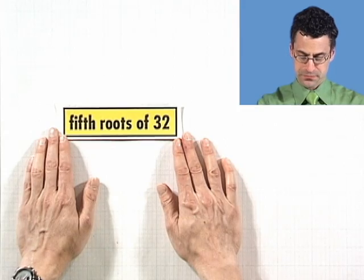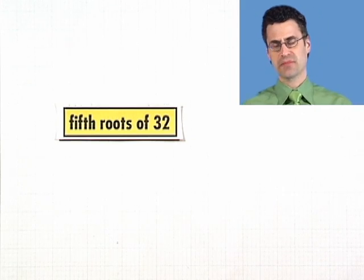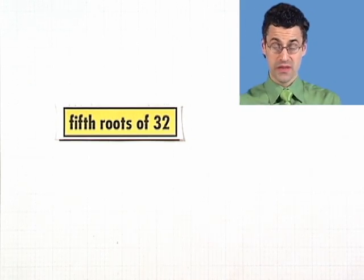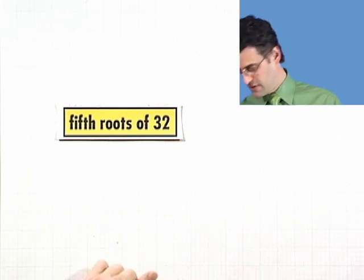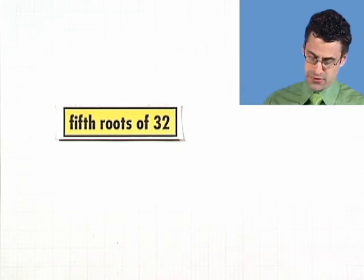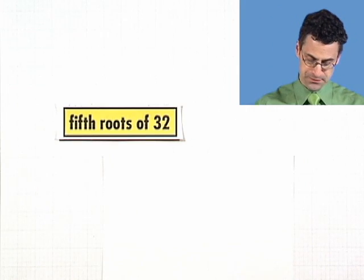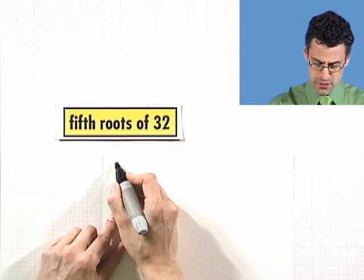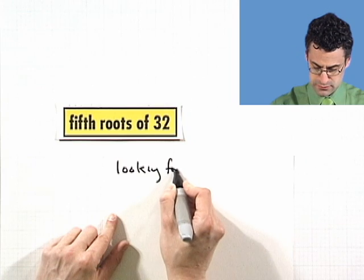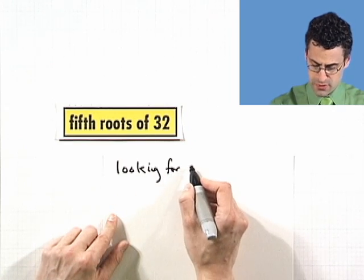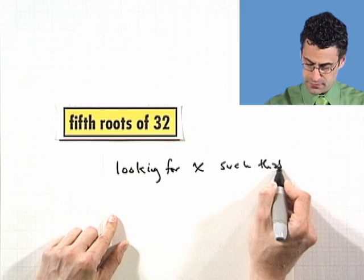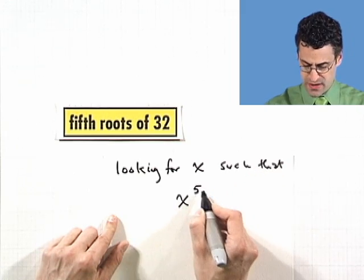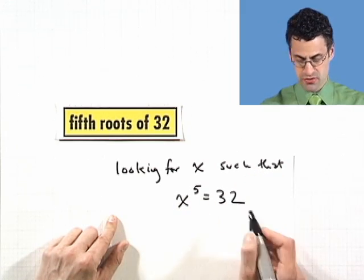Let's find all the fifth roots of 32. So what does that mean? I'm looking for a number that has the property that when I multiply it by itself, or namely, raise it to the fifth power, I'm actually going to get 32. So I'm looking for x such that x to the fifth equals 32. I want them all.